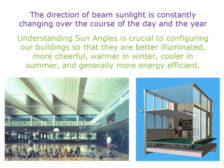The direction of beam sunlight is constantly changing over the course of the day and year. Understanding sun angles is crucial to configuring our buildings so that they will be better illuminated, more cheerful, warmer in winter, cooler in summer, and generally more energy efficient. This turns out to be a very bewildering and complex subject. It took human beings a very long time to evolve an understanding of it, and even for modern students it tends to be fairly challenging.